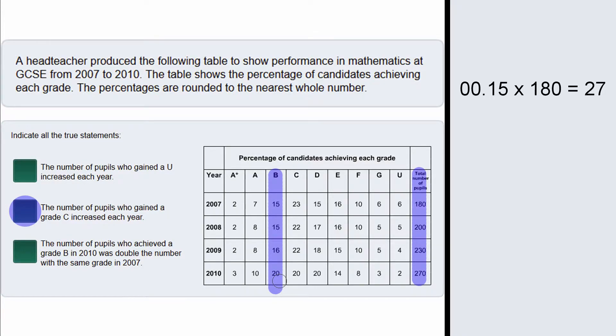We can see here that 20% got a grade B in 2010. So we do 0.2 multiplied by 270 which gives us 54, and of course 54 is double 27, so this statement is also true.